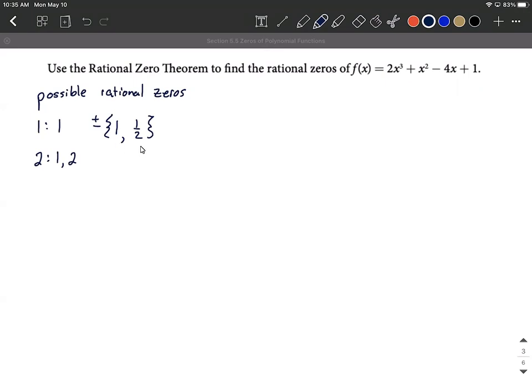but really this means we have four different possibilities: positive 1, negative 1, positive 1/2, negative 1/2. And let's jump into testing these out. We only have four possibilities. So you can start wherever you want with those four values. I'm going to start with 1 and I'm going to use synthetic division to help out.